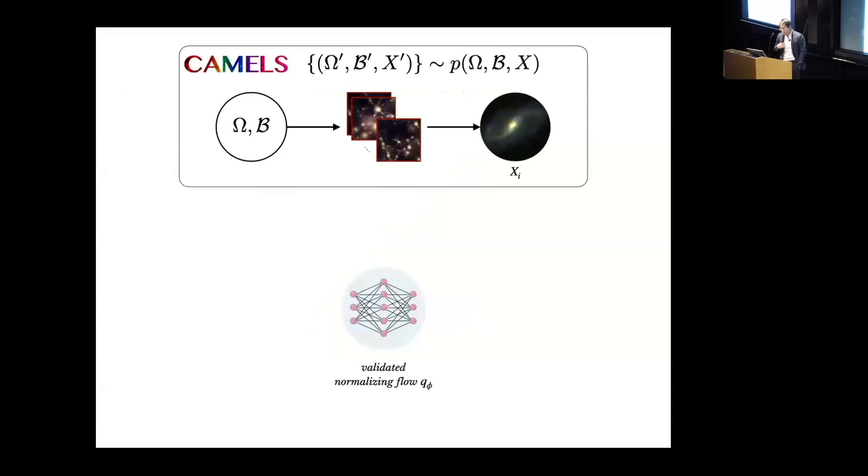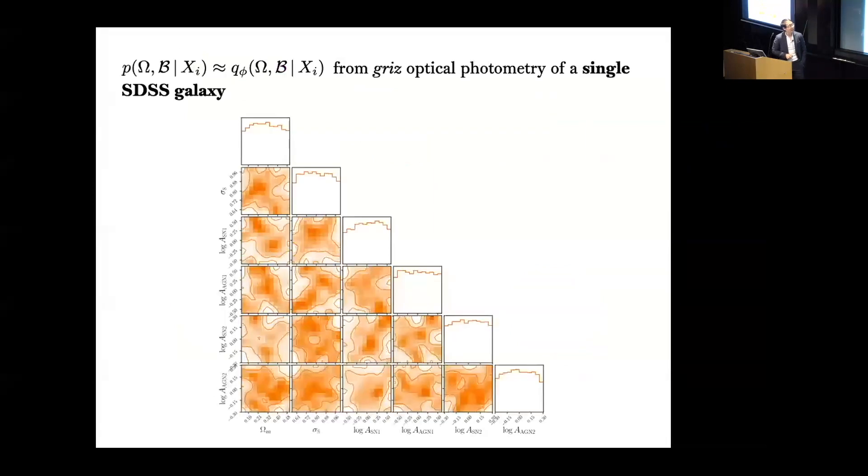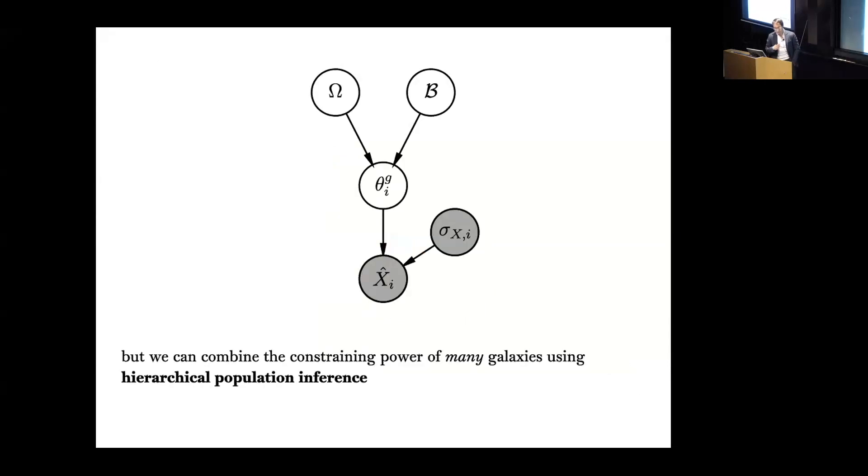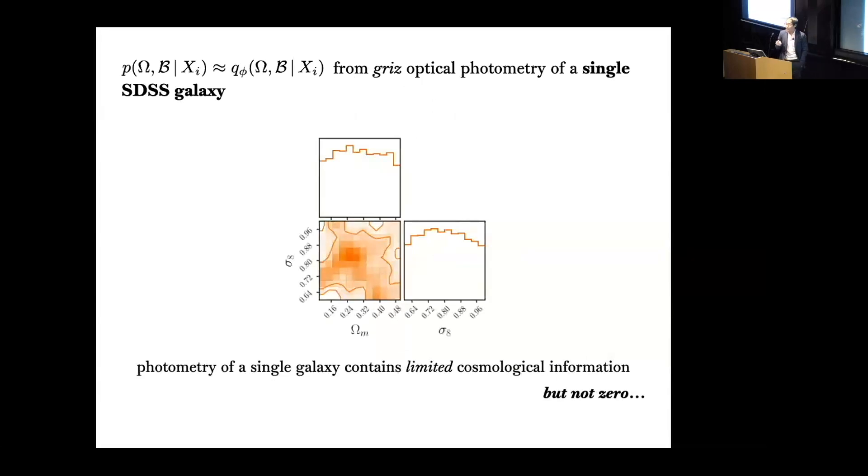Then after we validated it, now we can go ahead and plug in the actual observed photometry and then derive the posterior using the observed photometry of galaxies. When we do this, here's the posterior that we actually get. This is for a single SDSS galaxy using griz band optical photometry. I'm showing you the posterior of cosmological parameters and the four hydrodynamical parameters for supernova and AGN feedback. If we focus on just the cosmological parameters alone, what we find is that a single galaxy, the photometry of a single galaxy, contains pretty limited cosmological information. But I want to highlight that the amount of information however is not zero.